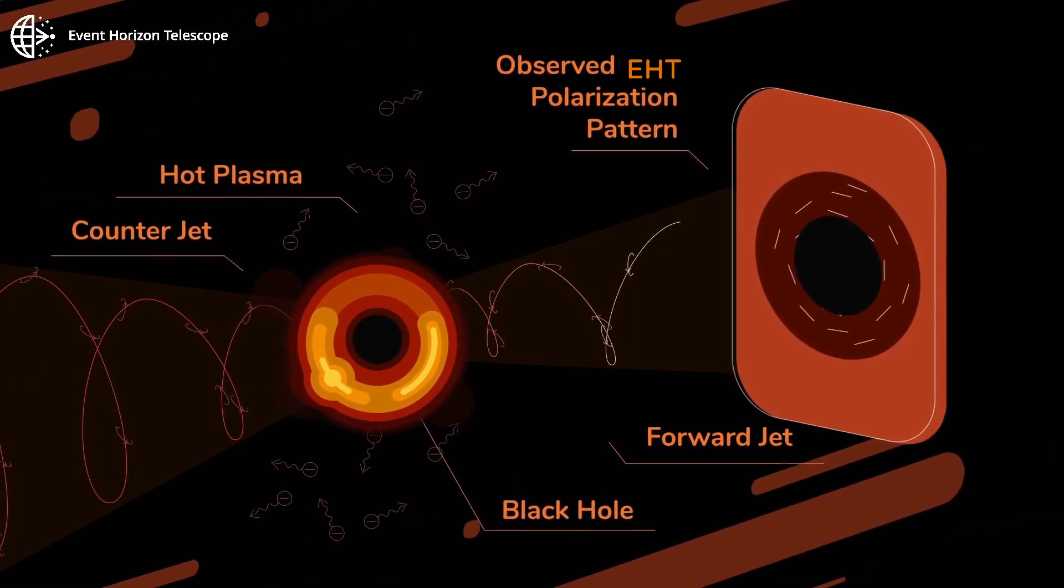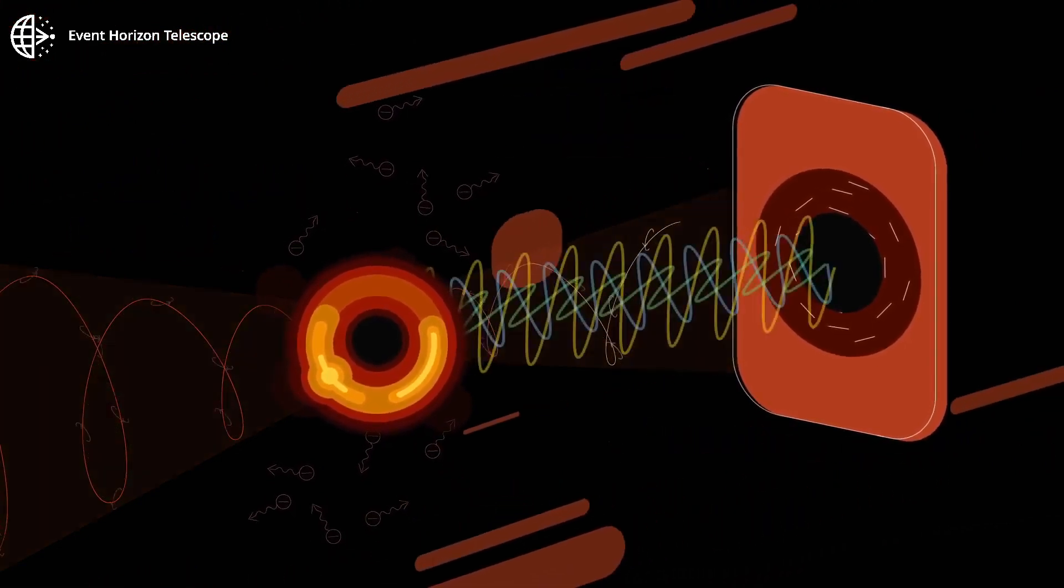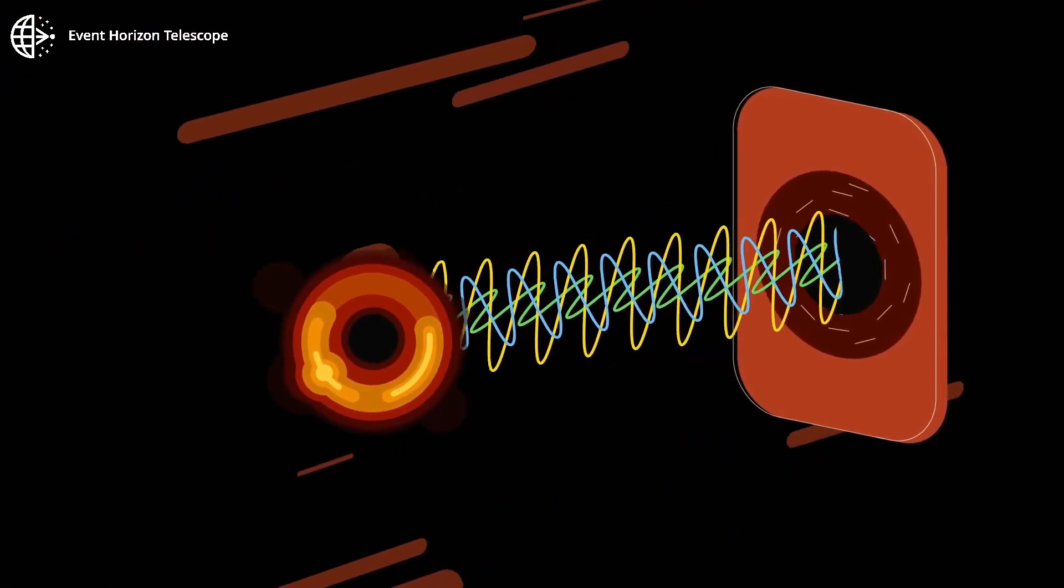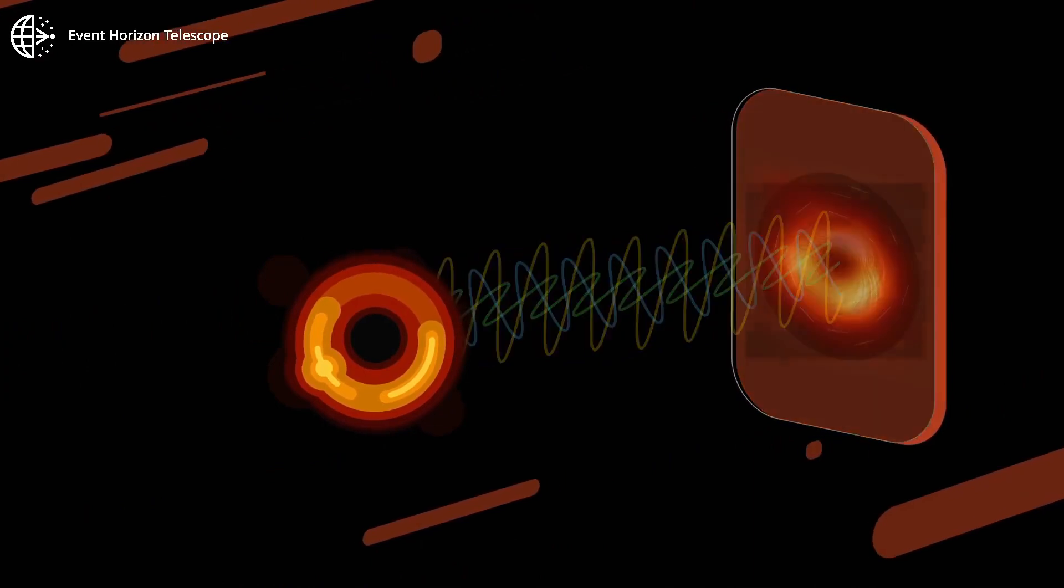The polarized light rays that manage to escape travel to a distant camera. The intensity of the light rays and their direction are what we observe with the Event Horizon Telescope. Using this knowledge, we can map out the magnetic fields that surround black holes.